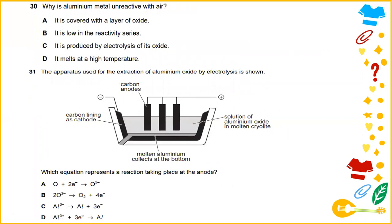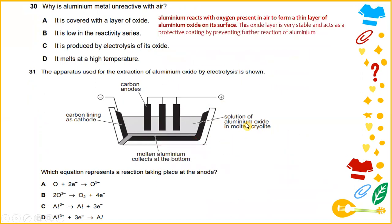Why is aluminum metal unreactive? Because aluminum reacts with oxygen present in air to form a thin layer of aluminum oxide on its surface. This oxide layer is very stable and acts as a protective coating by preventing further reactions of aluminum. The answer would be A, it is covered with a layer of oxide.